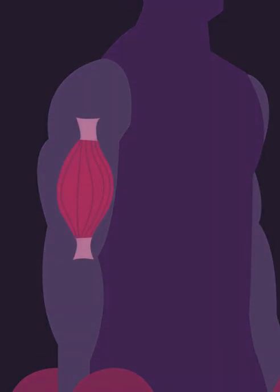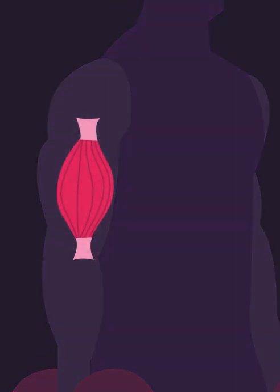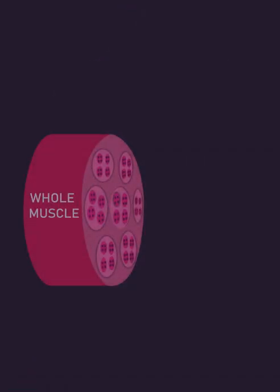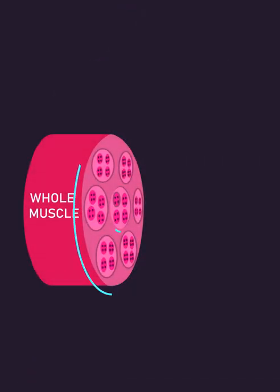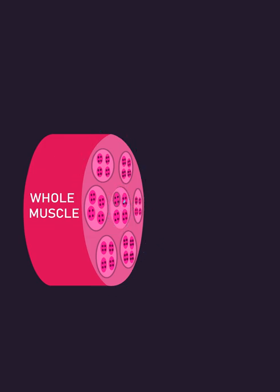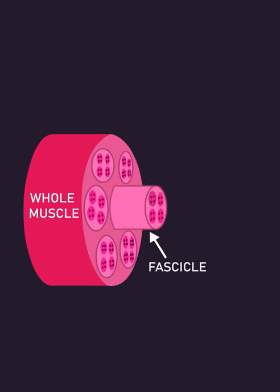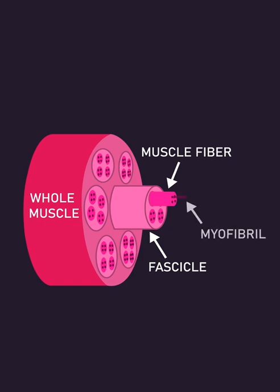How do muscles produce force? Muscles are organized in hierarchical layers. Within the whole muscle are fascicles. Within fascicles are muscle fibers. And within muscle fibers are myofibrils.